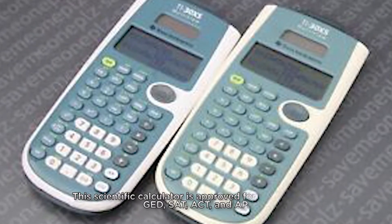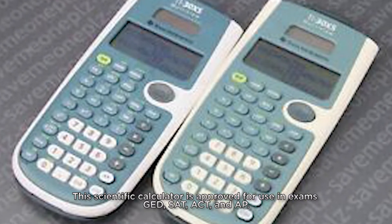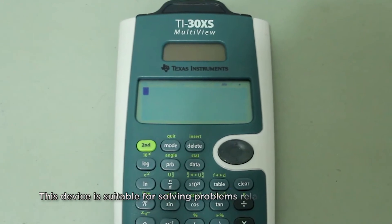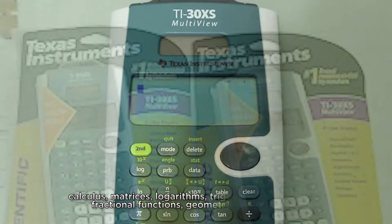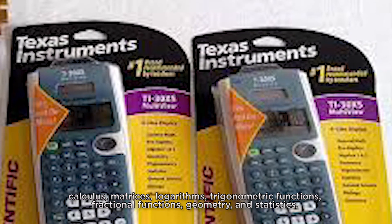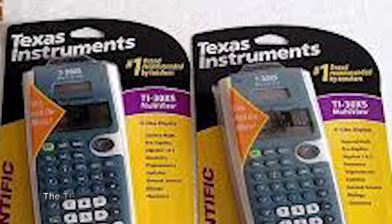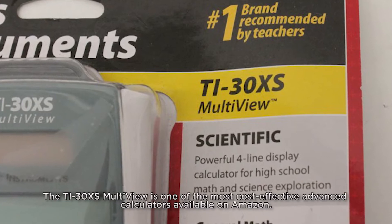This scientific calculator is approved for use in exams GED, SAT, ACT, and AP. This device is suitable for solving problems related to Algebra 1 and 2, Calculus, Matrices, Logarithms, Trigonometric Functions, Fractional Functions, Geometry, and Statistics. The T30XS MultiView is one of the most cost-effective advanced calculators available on Amazon.